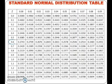Just locate 0.6 from the first column and 0.03 from the first row and read the corresponding probability in the body of the table.